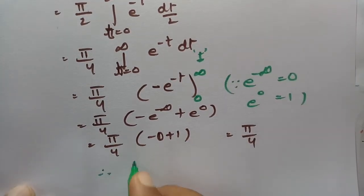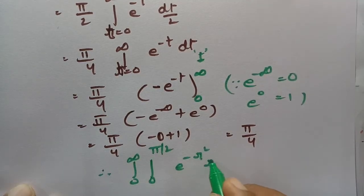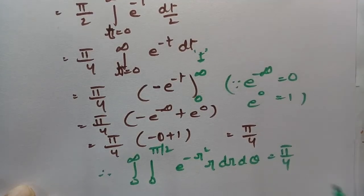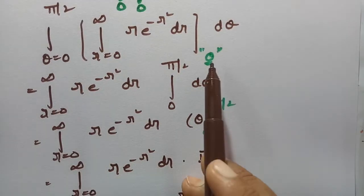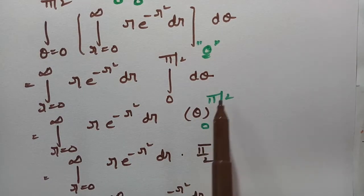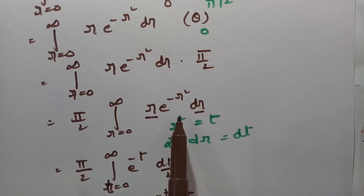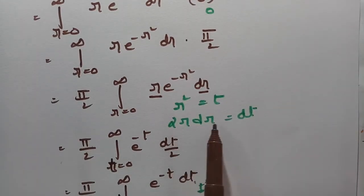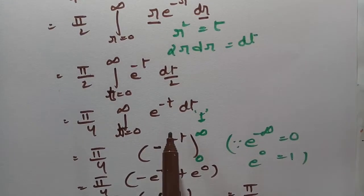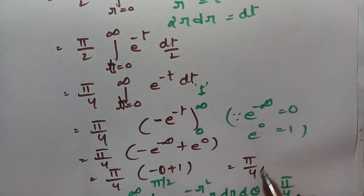Therefore our value, that is integral 0 to infinity, integral 0 to pi by 2, e to the power minus r squared, r dr d theta, value is nothing but pi by 4. This is how we have to solve. First of all I split the integrals, then I integrated with respect to theta giving pi by 2, sent pi by 2 outside, then integrated with respect to r using the substitution t equal r squared, so 2r dr equals dt. After substituting and evaluating all limits I got the value of pi by 4.